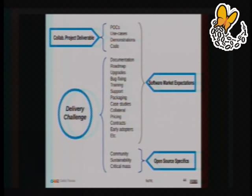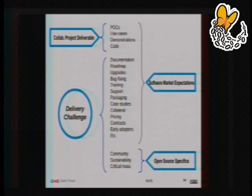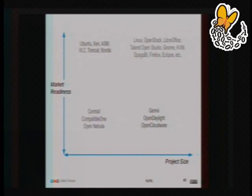What the market expects is something that is much more than code, and the gap between what these collaborative projects deliver and what the market expects is what I call the delivery challenge — something that needs to be addressed by project leaders. To develop all this, you require some sort of organization. Plus, talking about open source software, there are some specifics given the size of the community — in terms of sustainability, is it long-term, and in terms of critical mass. Looking at projects, whether they are market-ready and whether they're big or not, I have laid out some projects according to their sizes and my personal estimation of whether they are ready for market.